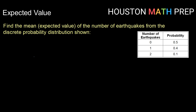Let's say we have the distribution here for number of earthquakes. We have three possible outcomes: there could be zero earthquakes, one earthquake, or two earthquakes, and we have the probability of each. There's a 50% probability, or 0.5, that there will be zero earthquakes; 40%, or 0.4, of one earthquake; and 10%, or 0.1, of two earthquakes.